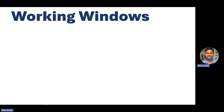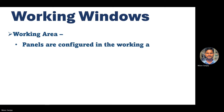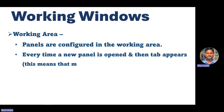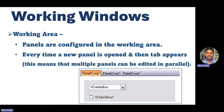Before understanding how you design, it's very important to understand the different working windows. The first window is the working area where panels are configured. Every time a new panel is opened, a tab appears, meaning multiple panels can be edited in parallel. So you can have multiple panels open and work on them simultaneously - here you can see a first panel, second panel, and third panel as parallel instances, with one active at a time.